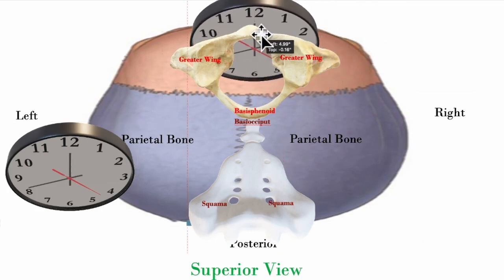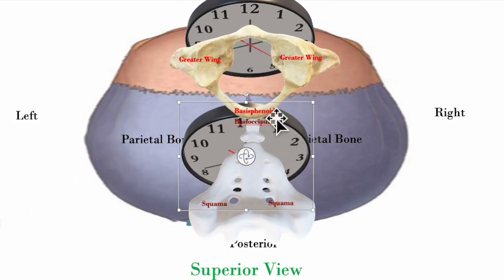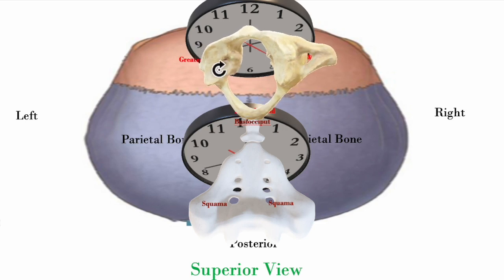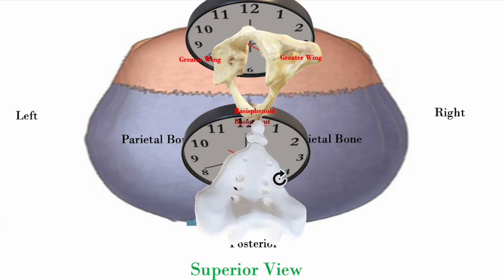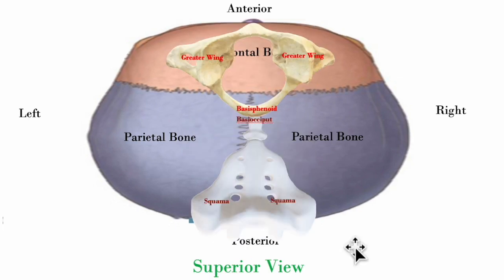We can use a clock to visualize this. In a right torsion, you can see the greater wing moving counterclockwise, so the sphenoid is moving counterclockwise while the occiput is moving clockwise. In a torsion, the sphenoid and occiput move in opposite directions.